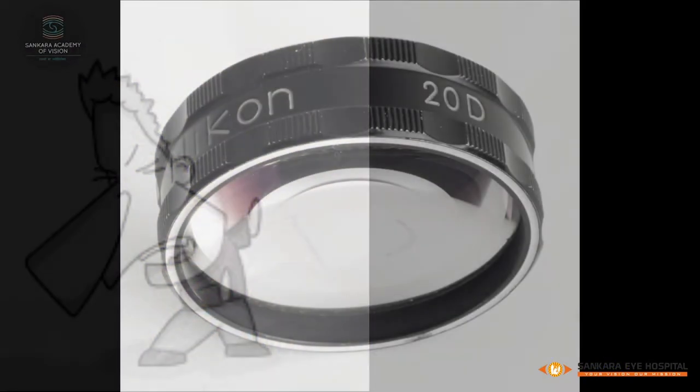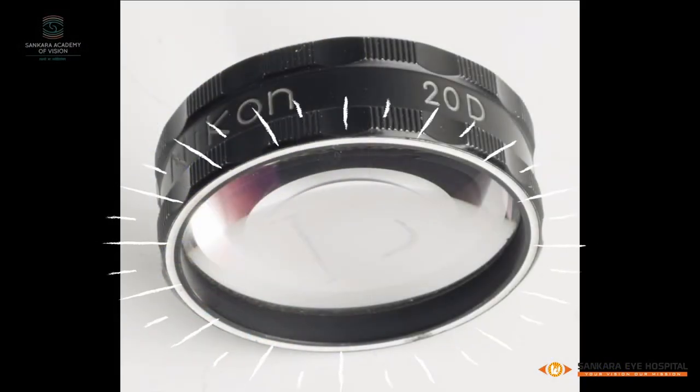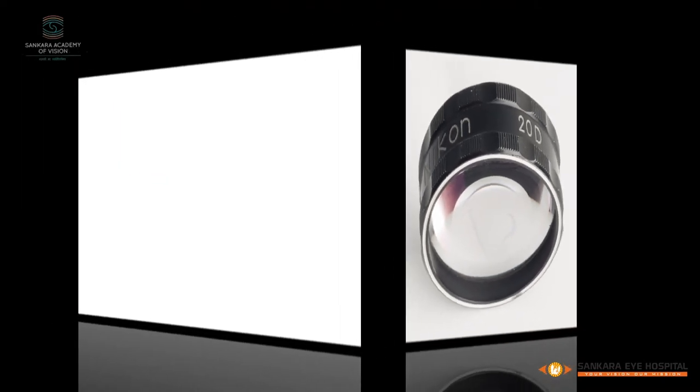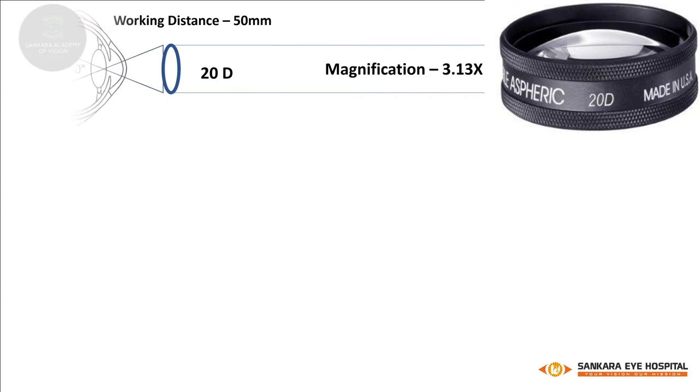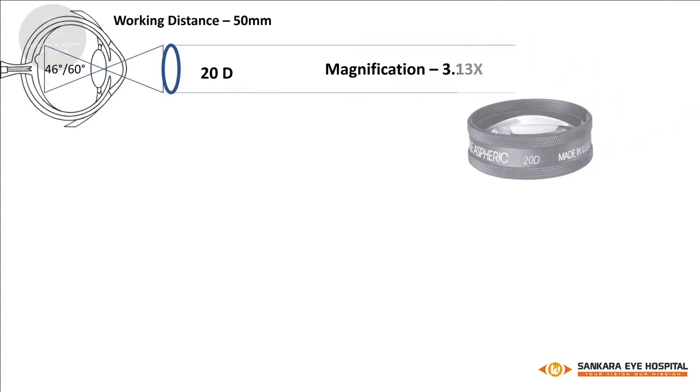Usually the steeper surface, which is indicated by the white markings on the rim, faces the patient. The 20-diopter lens is the most commonly used binocular indirect ophthalmoscopy lens. It has magnification up to 3.13 times and 60 degrees dynamic field of view.